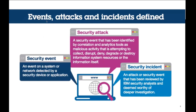An attack is a subset of events where an entity, tool, or person attempts to do something malicious with your system — collecting data, corrupting your system, creating a denial of service, or destroying your system. An incident is when something is considered worthy of deeper investigation — we think something bad actually happened. So we had the attack, which was the attempt, and the incident means we think something actually happened and we need to figure out what to do about it.